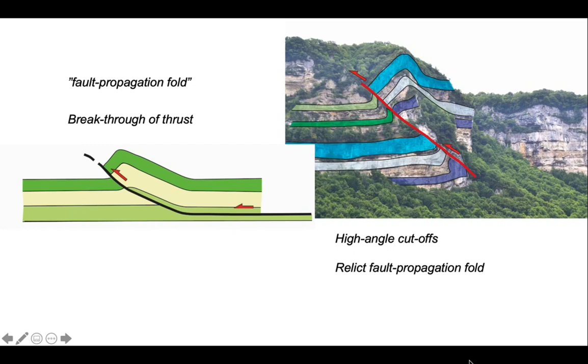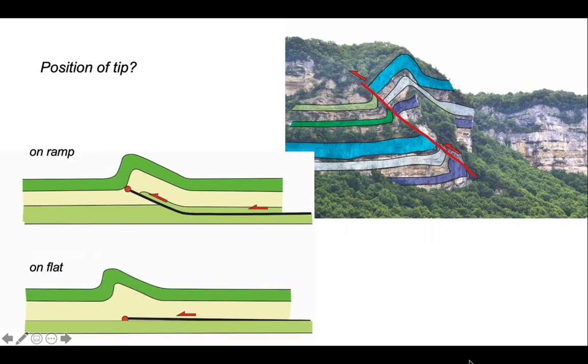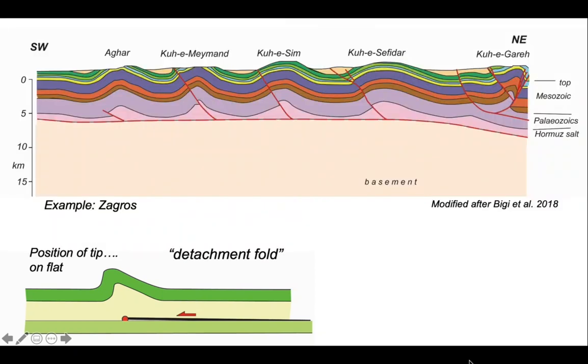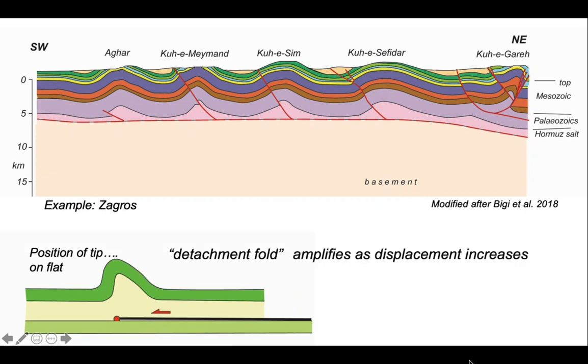So in these particular examples, the thrust is showing a displacement gradient as it's climbing a ramp. But what happens if the thrust shows the displacement gradient on the flat? We'll still see folding associated with the tip line. Here's an interpreted example from the Zagros and a cross section drawn by Sabina Bigi and others. And this shows the idea that there's an underlying master thrust beneath these rock sequences. And the folds are detaching downwards on this master detachment or floor thrust. And the feature of detachment folds is they will grow and amplify as displacement increases on the basal detachment.